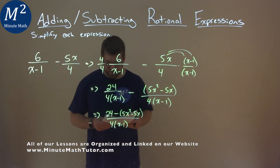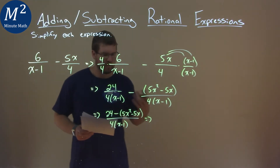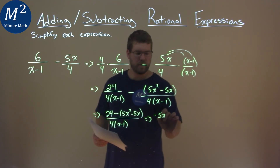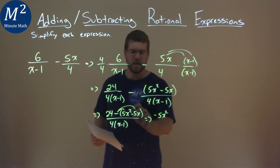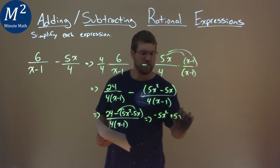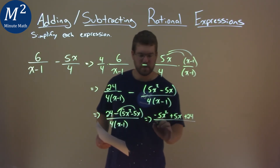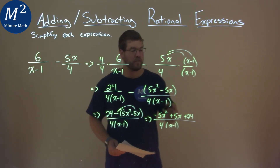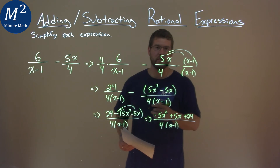We can simplify this just a little more — rearrange it and put the negative 5x squared out front: negative 5x squared, then making sure we're distributing the negative, we get positive 5x, and then plus 24, over the denominator 4 times (x minus 1). So our final answer is negative 5x squared plus 5x plus 24, over 4 times (x minus 1).